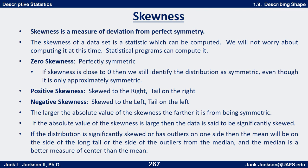If a distribution is not symmetric, it has what we call skewness — a non-zero skewness. Skewness is a measure of deviation from perfect symmetry, and it's actually a statistic you can compute, like the mean or standard deviation. If the skewness value is zero, that's perfectly symmetric. If it's close to zero but not exactly, we'll still identify the distribution as symmetric, since it's more or less symmetric.